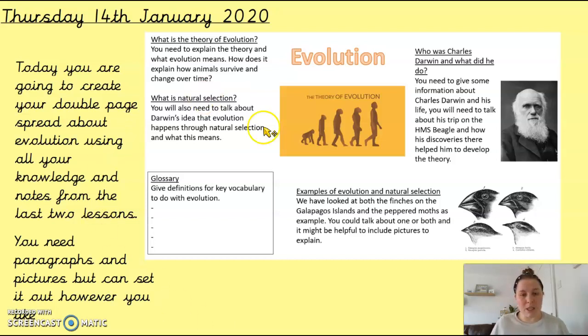So you obviously need a title of evolution somewhere. You can add in some kind of picture that you think exemplifies it. And then you probably need to talk about what evolution is, what natural selection is, which is the kind of specific way that Charles Darwin explained evolution.